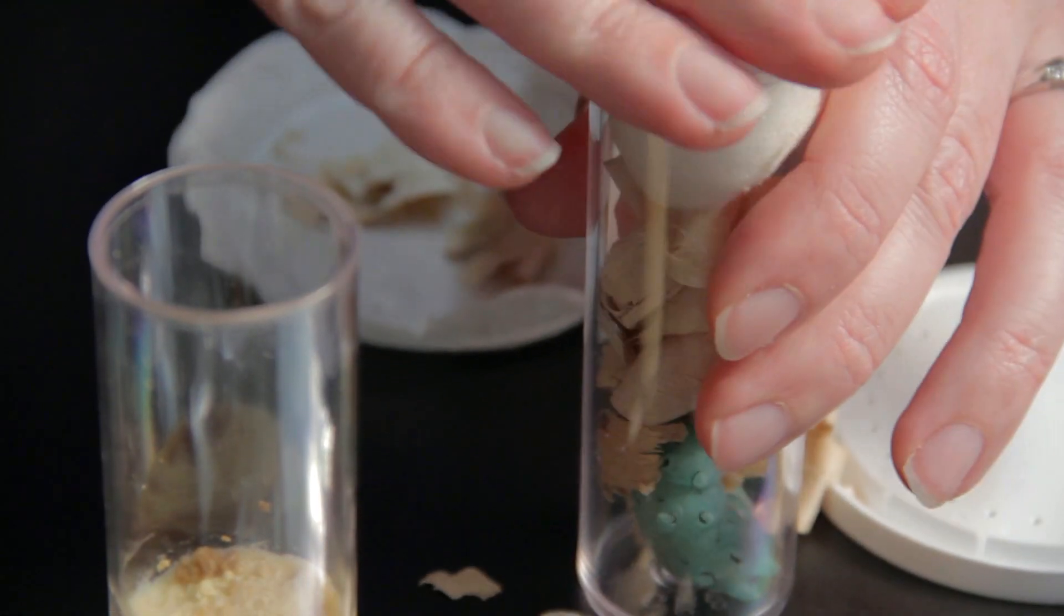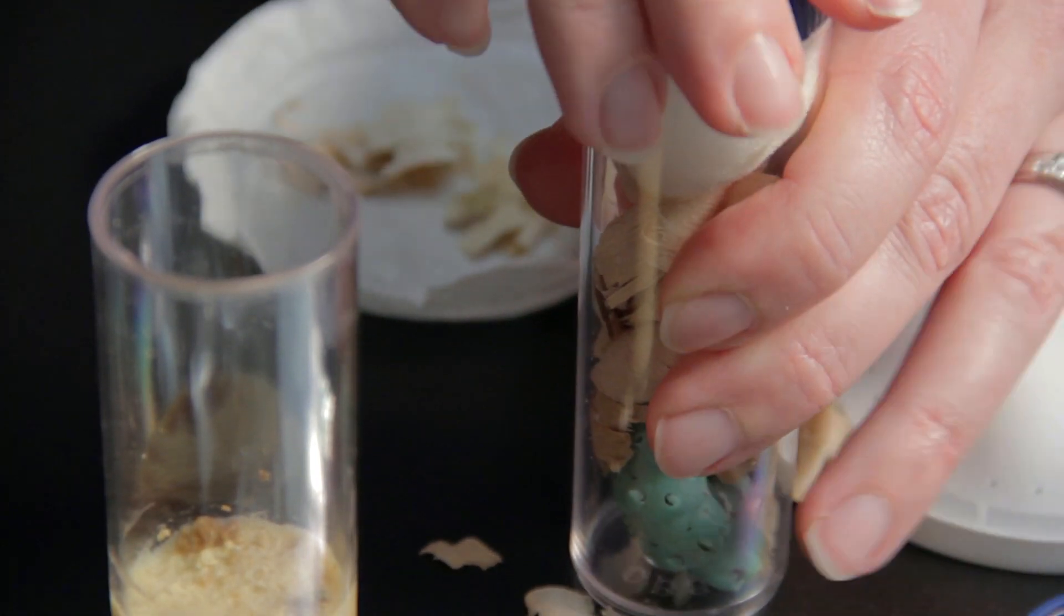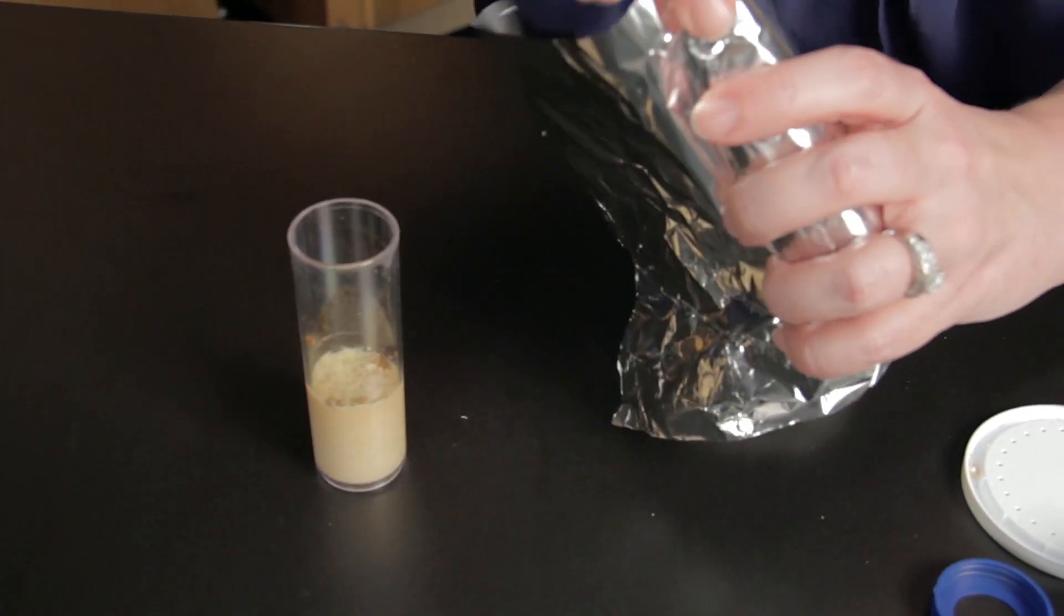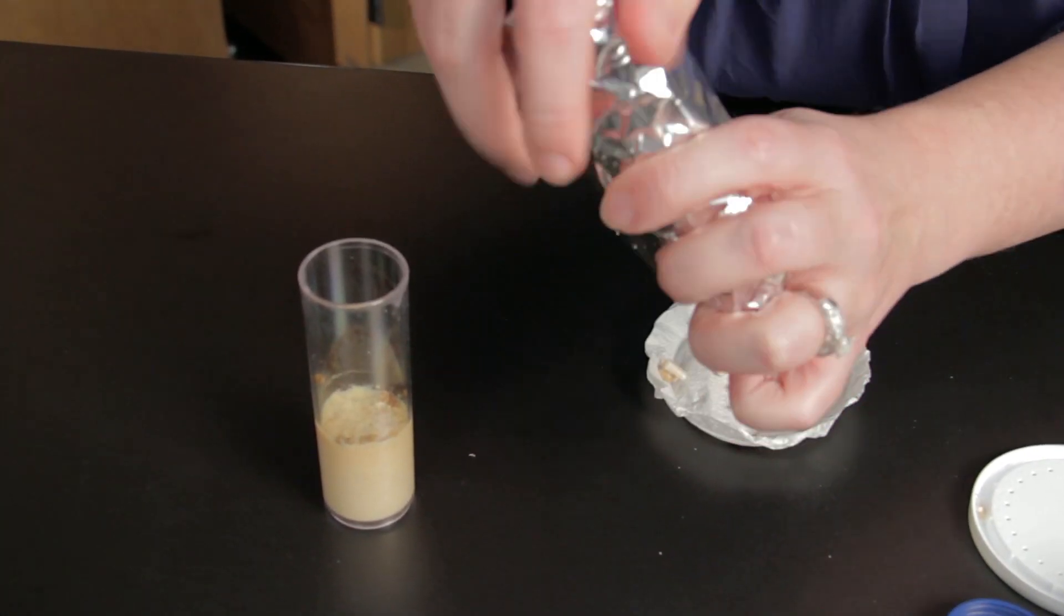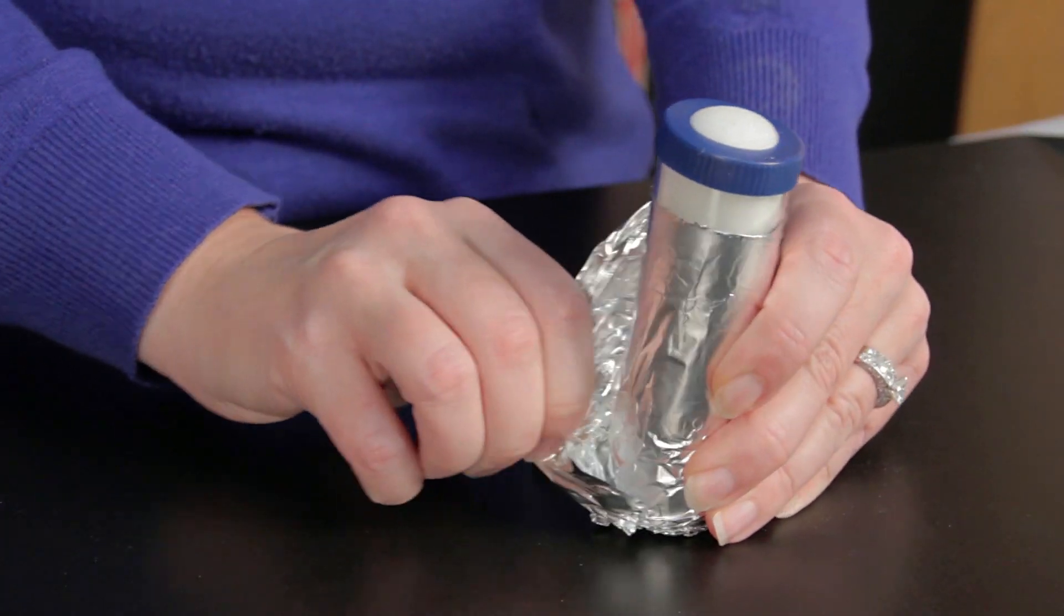Next, wrap the vial in newspaper or foil to provide the larvae complete darkness so it can pupate. Pupation should be complete in about seven days.